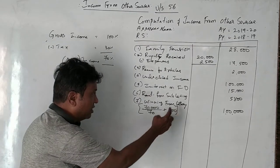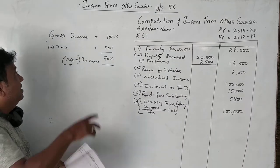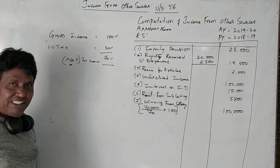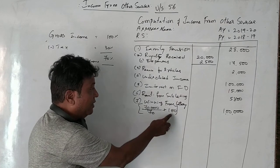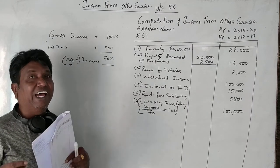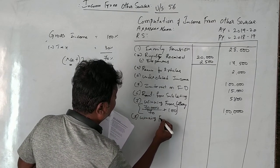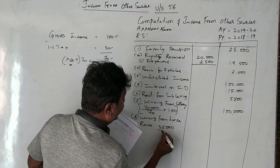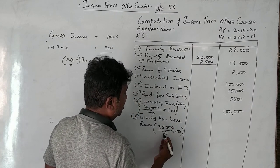Whenever there is a net casual income given, we need to gross it up. Gross income is 100 and tax is 30%, so net income is 70%. If net income is given, we find what the gross is. Next, winning from horse race — net amount given is 35,000. Net is to 70 as gross is to 100, so grossing up gives 50,000 rupees.